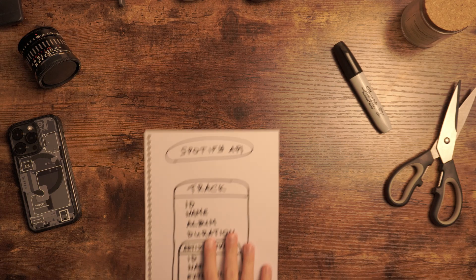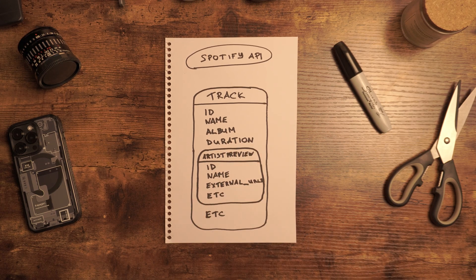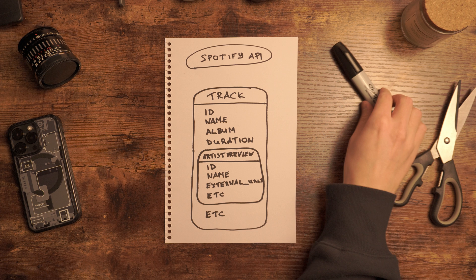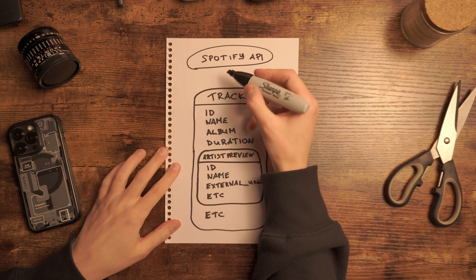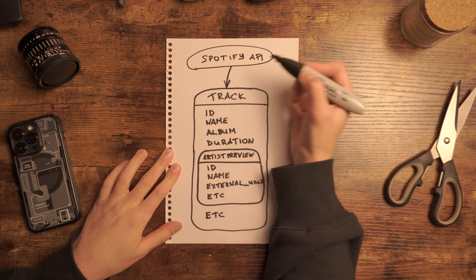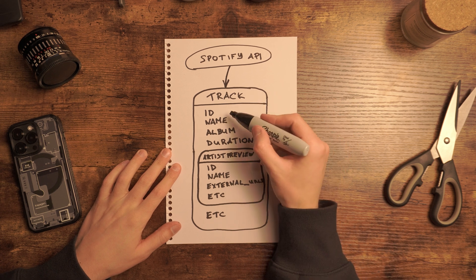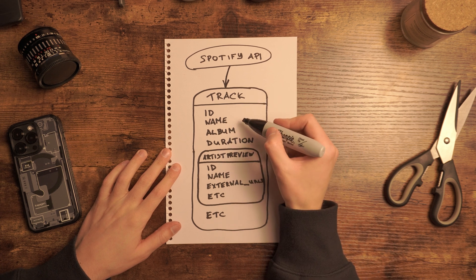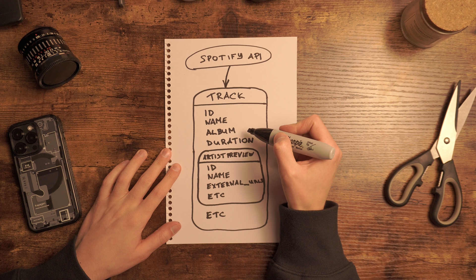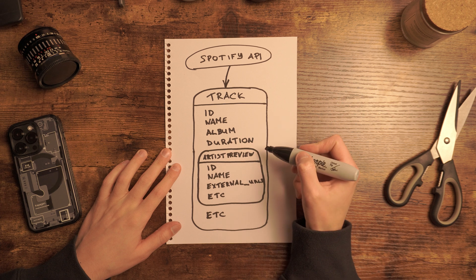First off, obviously there is no way to fetch your entire library in a single request, so we need to deal with data offsets. Here is what the Spotify API can provide us: for each page of data, there would be an array of tracks, and each track object contains a bunch of different properties, such as track identifier, name, album with album cover, and artist.